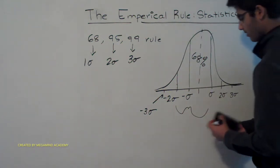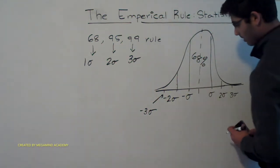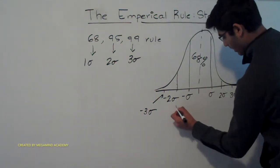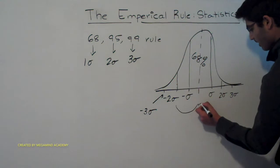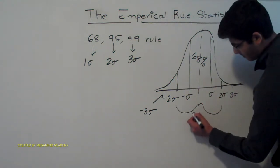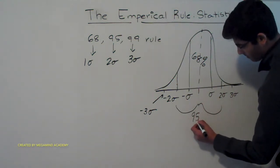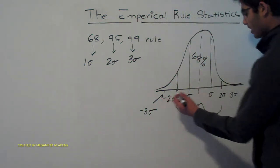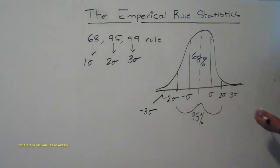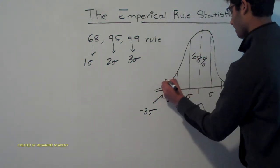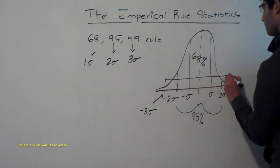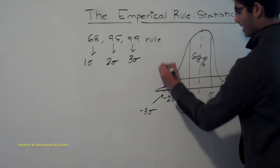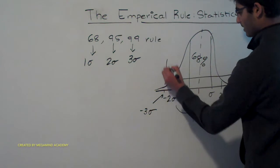Between two standard deviations away from the center — so from negative two standard deviations to two standard deviations — that's where 95% of the data lies. And then finally, from negative three standard deviations to three standard deviations, we have 99% of the data.